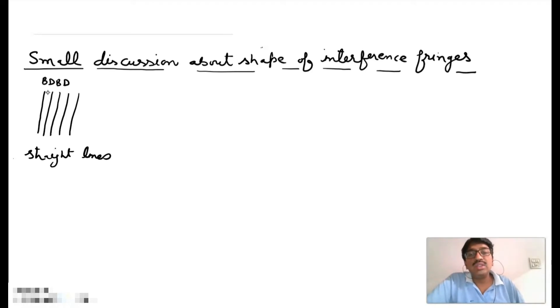But actually these are the practical shapes. But if we see the path difference, suppose these are two coherent sources S1 and S2 and it is screen.